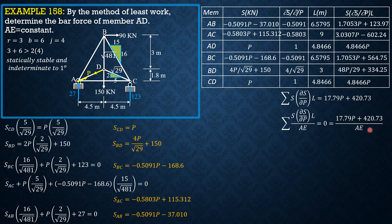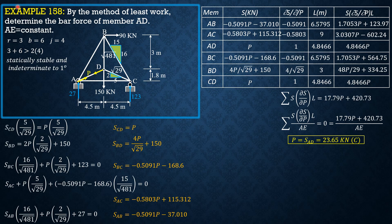So equate to 0, so AE does not matter. So P is negative, so it is in compression. So P is Sad equals 23.65 kilonewtons compression. So that's it for this problem.